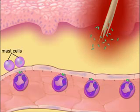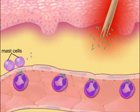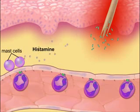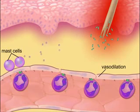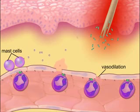The inflammatory mediators released by the injured tissue bring about changes in the environment that cause mast cells to degranulate and release histamine. Histamine causes vasodilation and an opening of the junctions between the endothelial cells, allowing fluid and leukocytes to leave the capillary and enter the infected tissue.